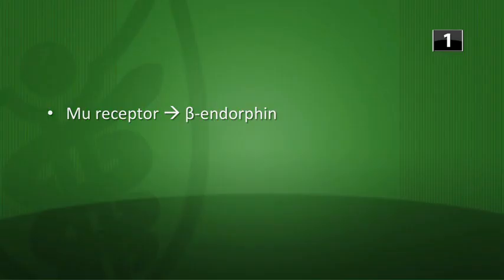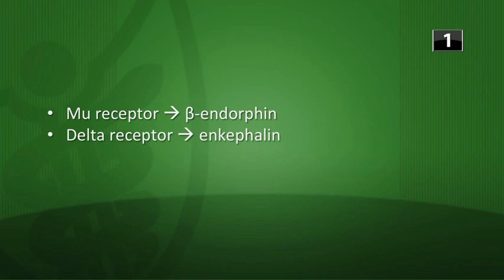Let's go over the three-question warm-up for PharmBasics II. First question: what are the endogenous agonists to the different opioid receptors? At the mu receptor, the agonist is beta-endorphin. At the delta receptor, the agonist is enkephalin. And at the kappa receptor, it's dynorphin.